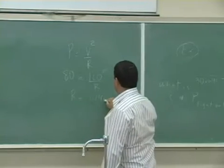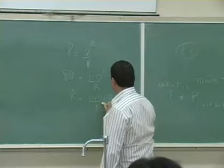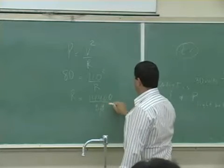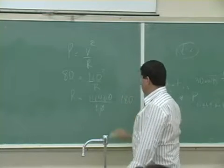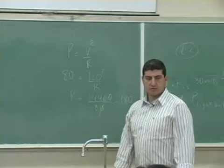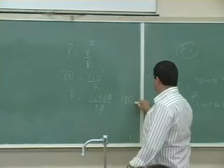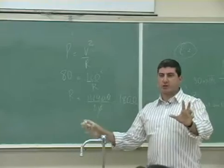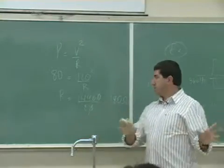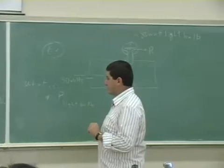14,400 divided by 80. Cancel 10. So 8 goes into there once, 64, goes in there 8, 180 ohms. So now I use the fact that it gives you 80 watts at 120 volts to find its resistance.